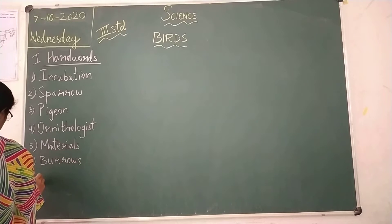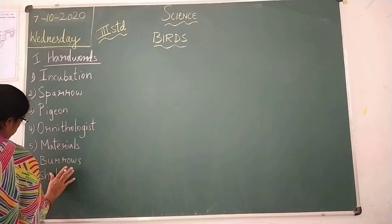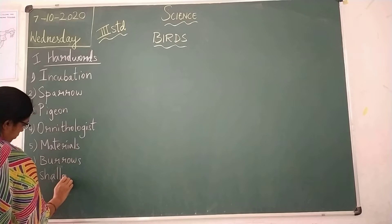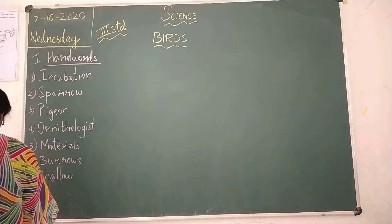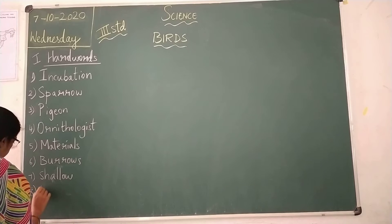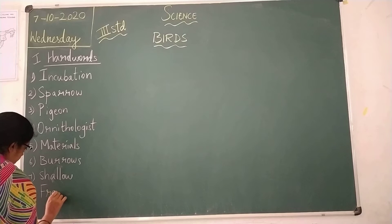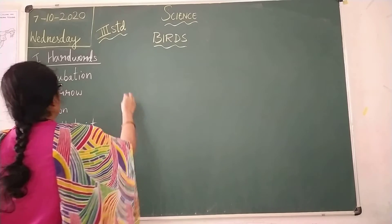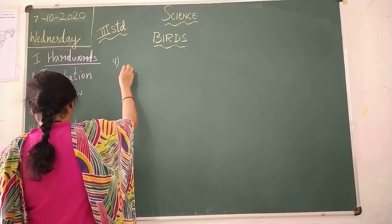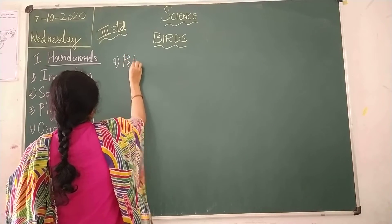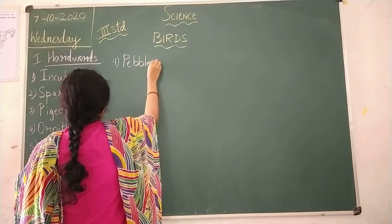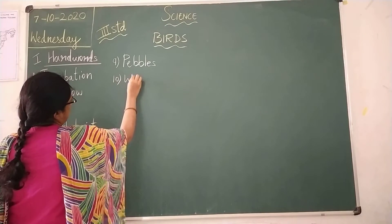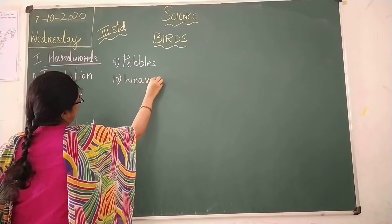Seventh one is shallow. S-H-A-L-L-O-W, shallow. Eighth one, freezing, F-R-E-E-Z-I-N-G, freezing. Ninth one, pebbles, P-E-B-B-L-E-S, pebbles. Tenth one is weeds, W-E-E-D-S.